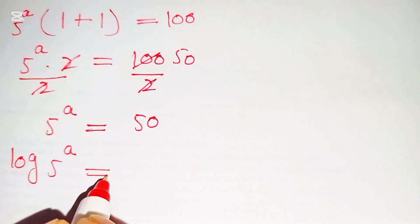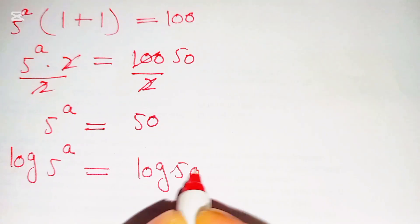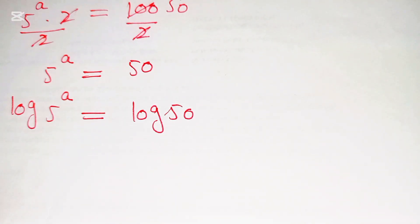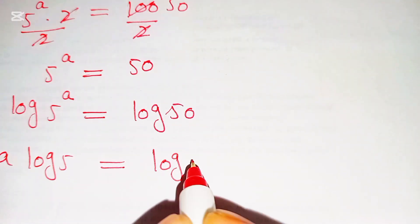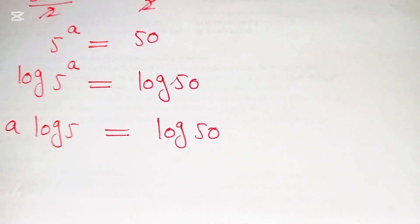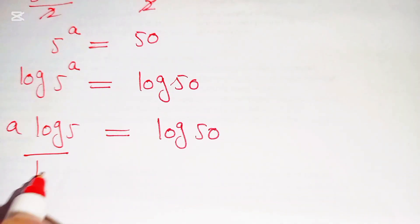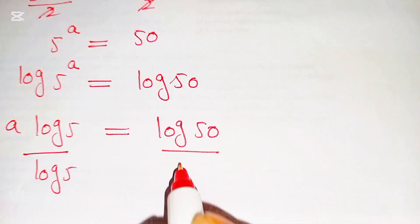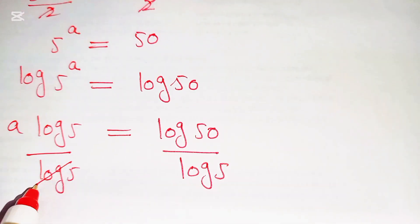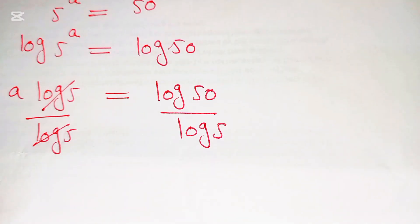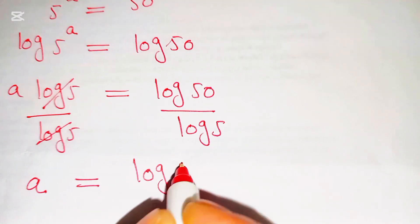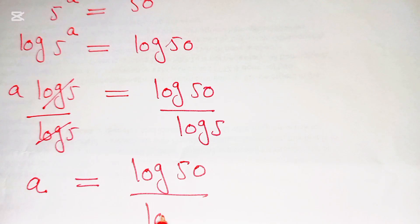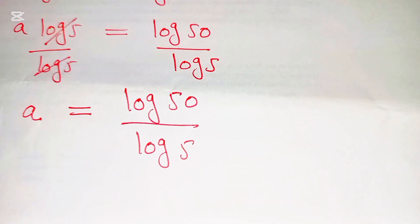Now we take log of both sides: log of 5 power of a is equal to log 50. So here, a times log 5 is equal to log 50. Dividing both sides by log 5, we get a is equal to log 50 over log 5.